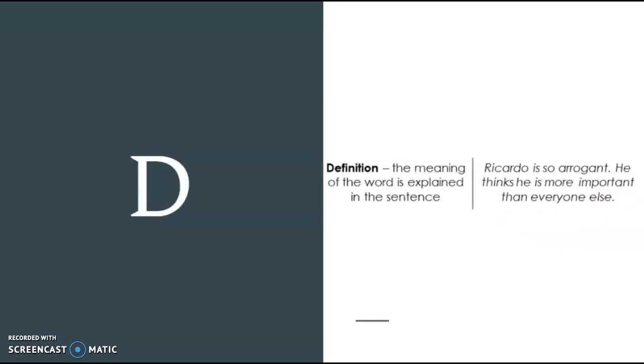The definition. Obviously we all know the meaning of a definition. It's the meaning of the word that is explained. Sometimes it's in the sentence or in a surrounding sentence, a sentence before or a sentence after. In this example, we have a sentence after. Ricardo is so arrogant. He thinks he is more important than anyone else. So right here we have right after arrogant, the definition.